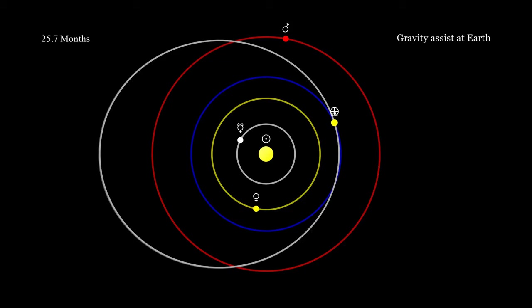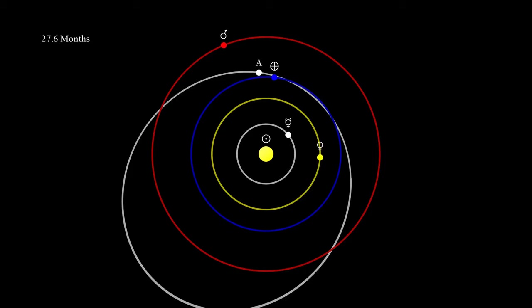But that's okay too, because all you need to do is have the Cycler do a gravity assist maneuver around Earth to rotate its orbit and point it at Mars again.